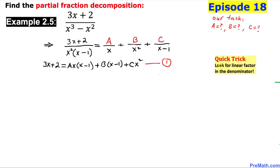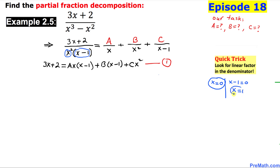Here is a quick trick: look for the linear factors in the denominator. We have x and x minus 1. Set both equal to zero: x equals zero from the first factor, and x equals positive 1 from x minus 1 equals zero.